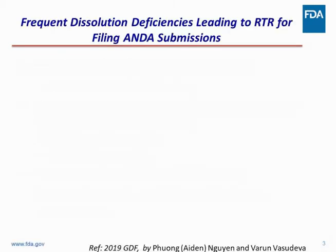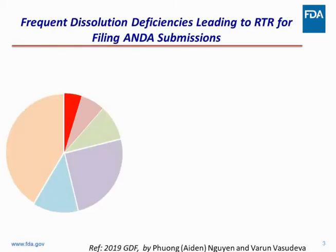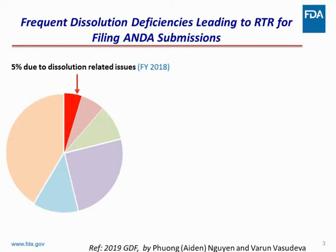Let me confess — I stole this slide from Warren, and you have seen this slide in the morning. But this pie chart, which reflects the deficiency related to RTRs, shows 5% are due to dissolution. 5% is a big number. We don't want to see that. We want to see a zero there. We want dissolution-related RTR deficiencies to be out of this pie. That is our goal, and we can do it together.